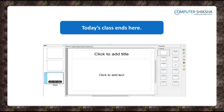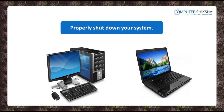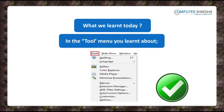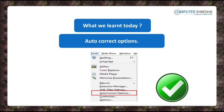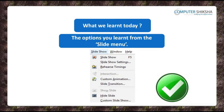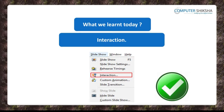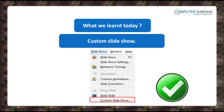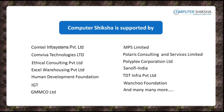We will end this class here — so all of you close your file and properly shut down your computers. In today's class, all of you learned about the remaining options of the Tools and the Slideshow menu. The options of the Tools menu that you learned about were Extension Manager and Auto-Correct. The options from the Slideshow menu that you learned about were Rehearse Timing, Interaction, Slide Transition and Custom Slideshow. Computer Shiksha is supported by. Thank you.